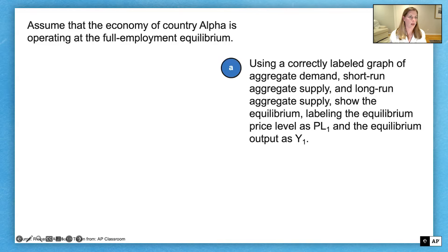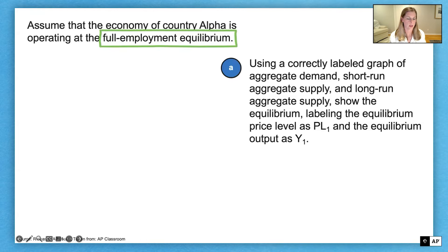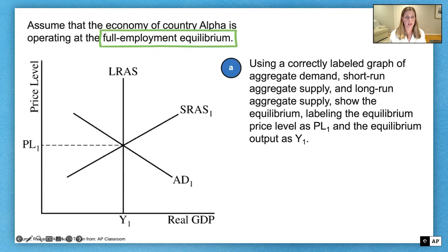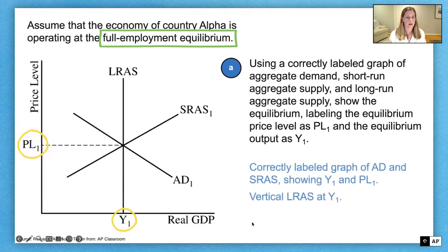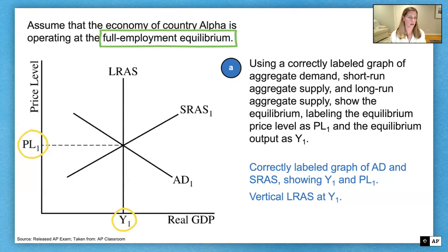Before we draw the graph, let's go back to the prompt. We're told that the country of alpha is operating at the full employment equilibrium — another way of saying this is that its current output is equal to its potential output. Here is our aggregate supply and demand graph. We have PL1 and Y1 at the intersection of short-run aggregate supply and aggregate demand. The Y-axis is labeled price level and the X-axis is labeled real GDP. A vertical long-run aggregate supply curve appears at Y1, because current output Y1 needs to equal potential output. So all three curves intersect on the graph.